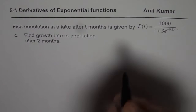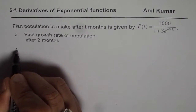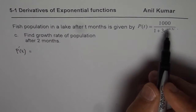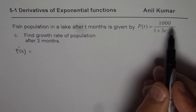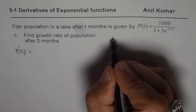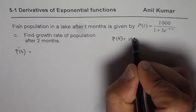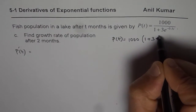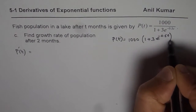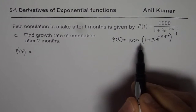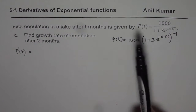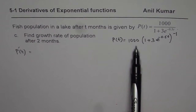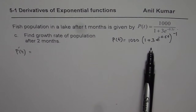Growth rate means derivative. We know what p of t is, so we will find the derivative of the function. We could write this function as p of t equals 1000 times the quantity 1 plus 3e to the power of minus 0.5t, all to the power of minus 1. In that case you could use it as a product function and apply the product rule to calculate the answer. Sometimes that is simpler.